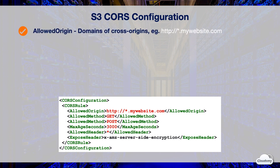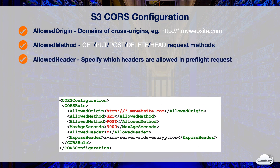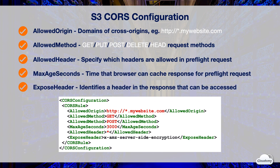Each CORS rule in the S3 CORS configuration XML comprises the following elements. The allowed origin element specifies which origins are allowed for cross-origin requests. You can use the asterisk wildcard. For instance, asterisk.mywebsite.com allows all origins from the subdomains of mywebsite.com. The allowed method element specifies which HTTP request methods are allowed. You can add multiple allowed methods in a CORS rule, such as GET, PUT, POST, and DELETE. The allowed header element specifies which headers are allowed in a preflight request, and you can use the asterisk wildcard. The max age seconds element specifies the time in seconds that your browser can cache the response for a preflight request. The expose header element identifies a header in the response that you want customers to be able to access from their applications, such as the x-amz-server-side-encryption header for encryption.